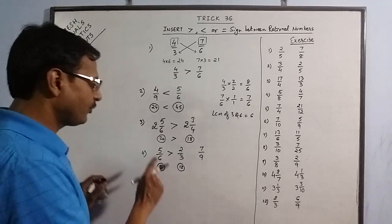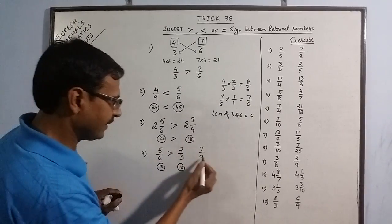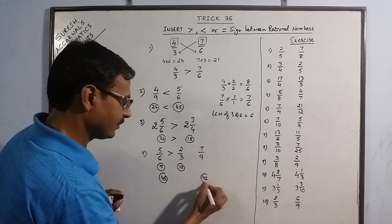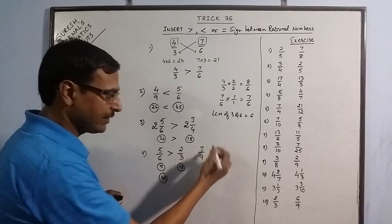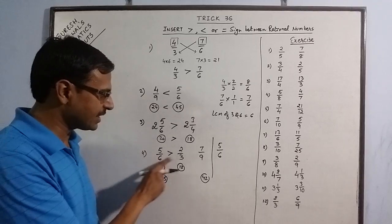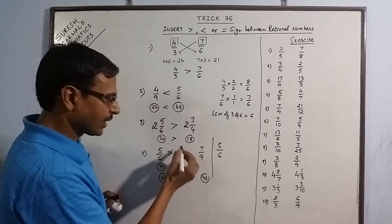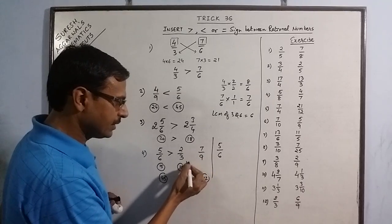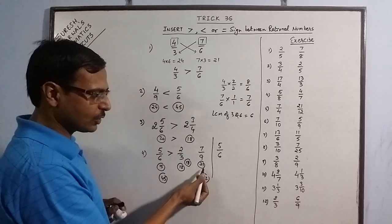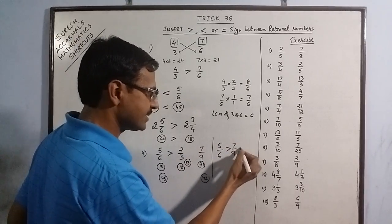Similar observations for 5 by 6 and 7 by 9: 9 times 5 is 45, 7 times 6 is 42. So this is greater than this also. We have 5 by 6 as the greatest of the 3 because 5 by 6 is greater than 2 by 3 and greater than 7 by 9. Now we compare these two: 18 and 21. So 7 by 9 is greater because 21 is greater than 18. We have the descending order.